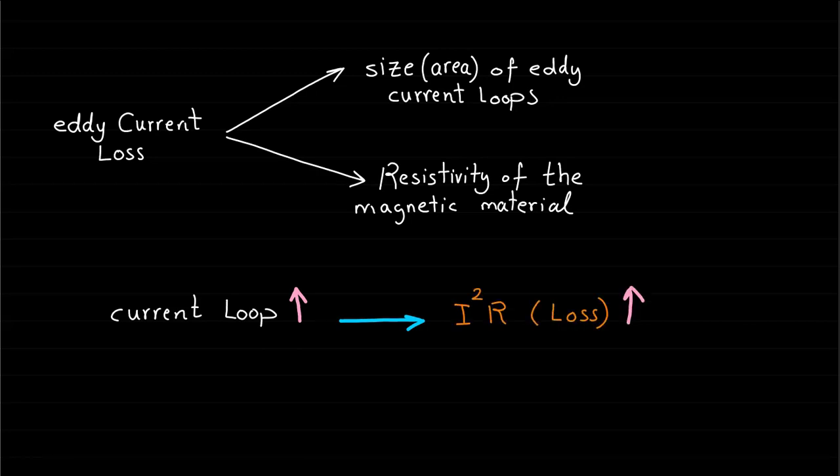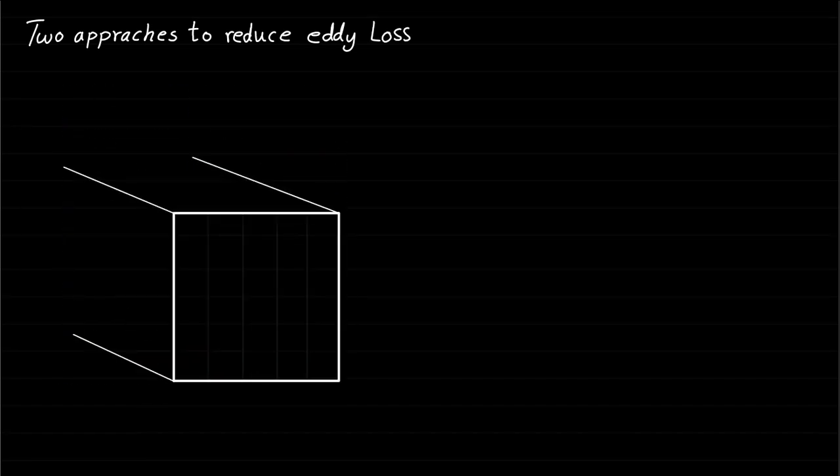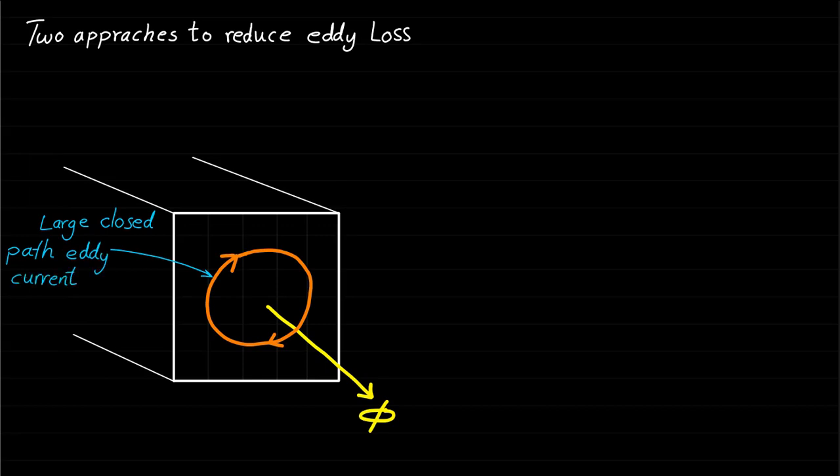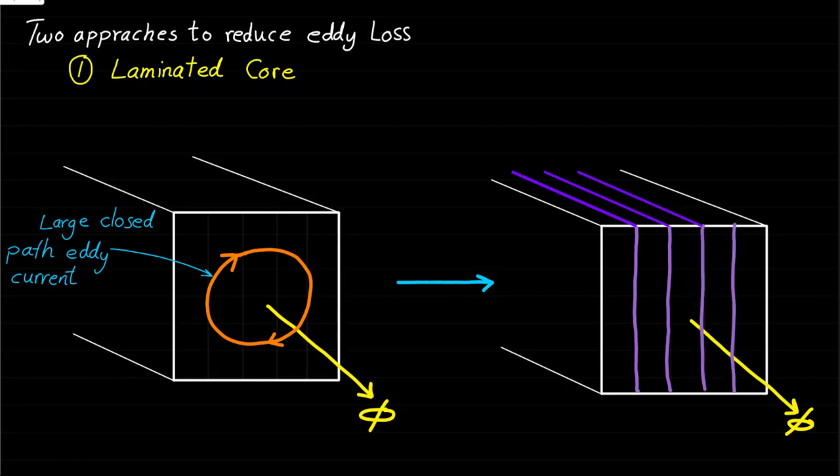On the other hand, the greater the resistivity of the material containing the current, the lower the current flow will be for a given induced voltage in the loop and then lower loss. These facts give us two possible approaches to reduce the eddy current losses. The first approach is using laminated core. If the magnetic core is broken up into many small laminations or strips,